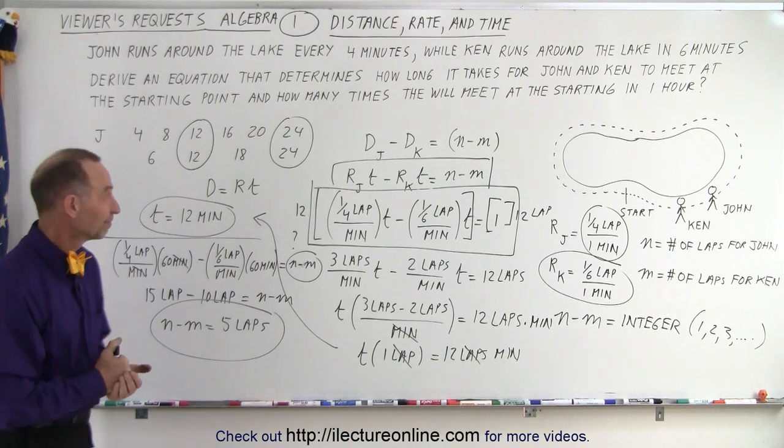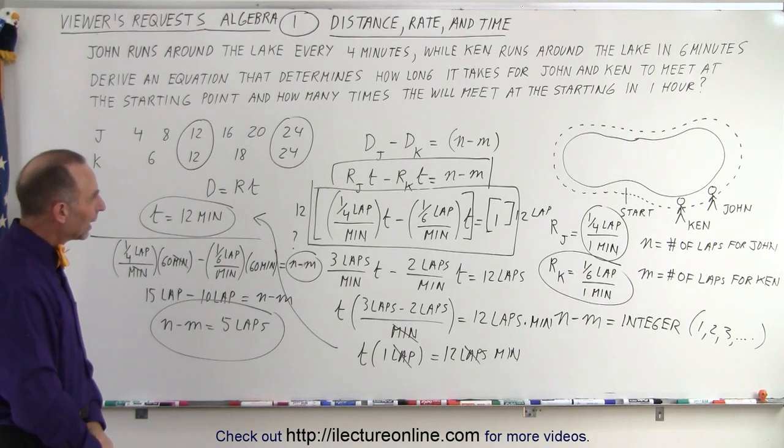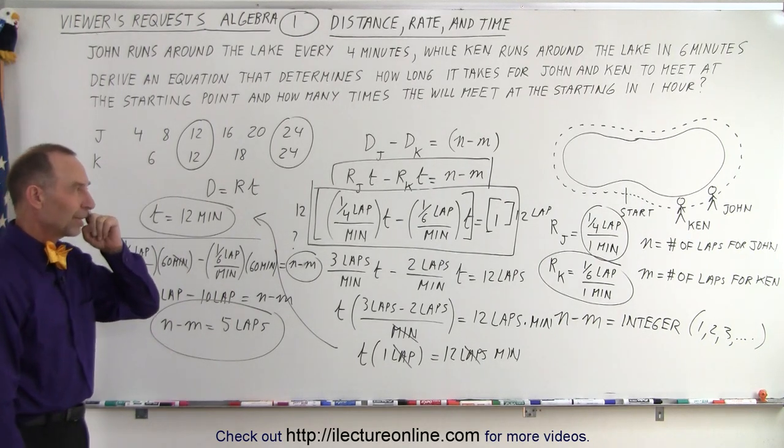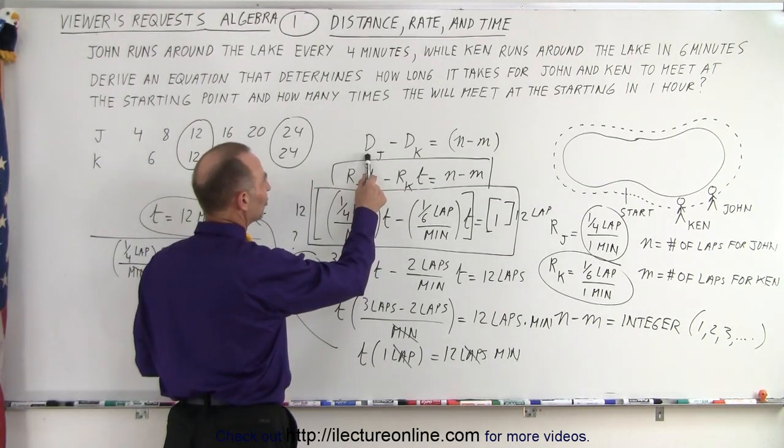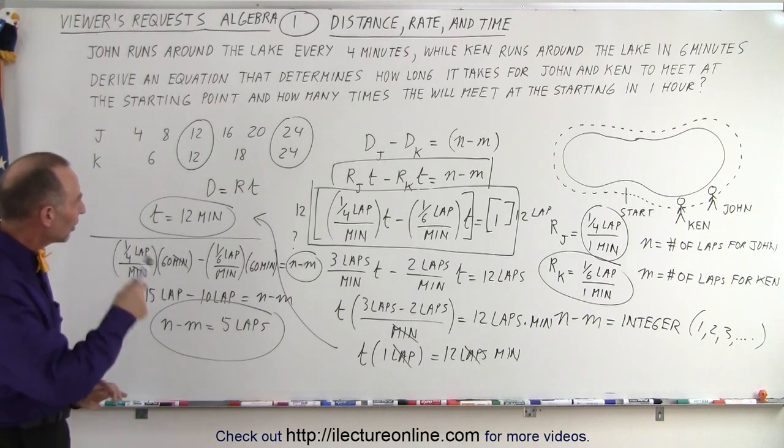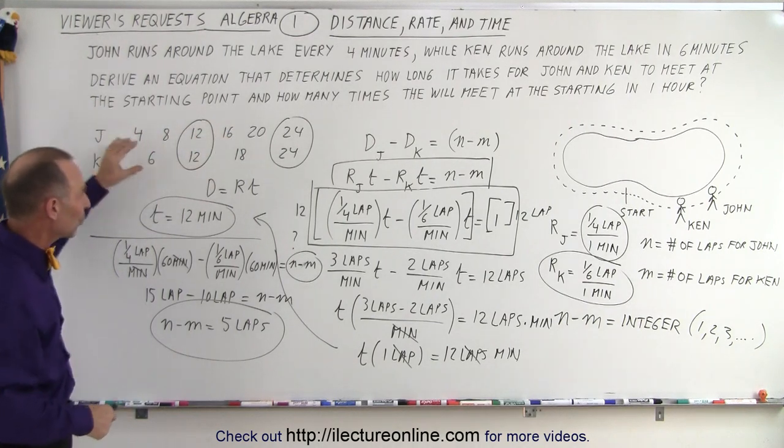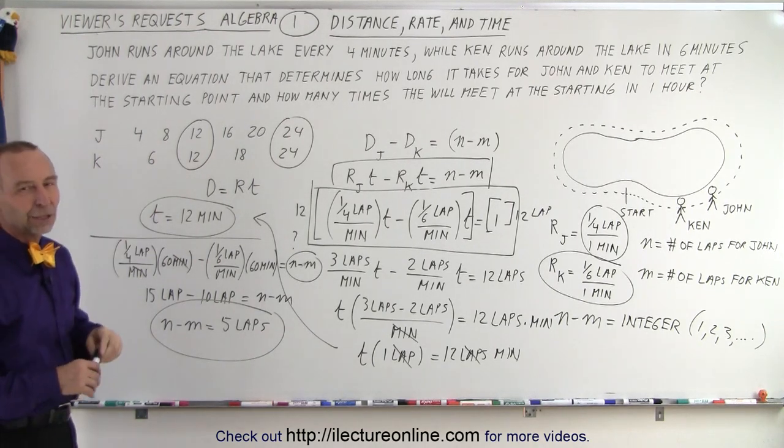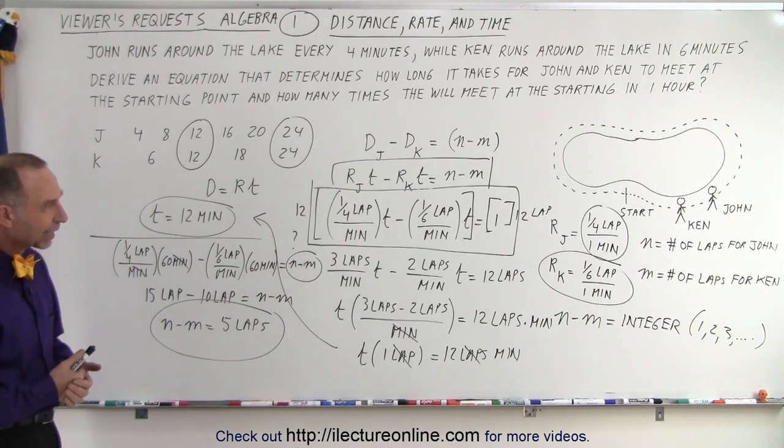Student asks: Couldn't you just use that initial thing, the 4, 8, 12, and know the equation straight from there, looking at the trend? Yeah, the idea would be to look at the trend. You could potentially come up with an equation, but I thought of it as a concept of distance, rate, and time. The concept is that the distance of John minus the distance of Ken equals an integer number of laps. That seemed to be the best approach. It's possible, and I actually thought about doing that. We could look at these numbers and come up with some sort of equation, but if we do it this way, it would be unique for these numbers, and then you would have to generalize it. This is starting with the general approach and then using particular numbers.